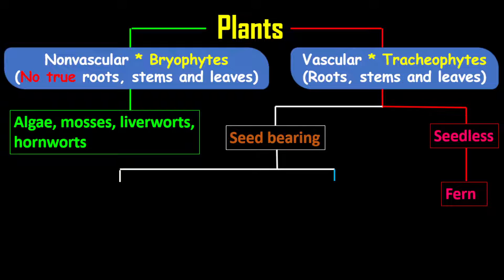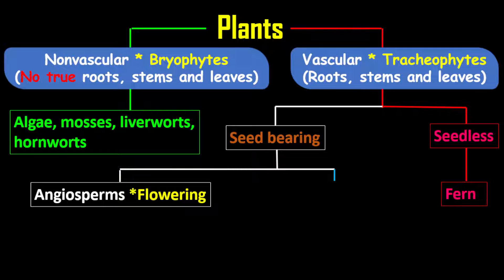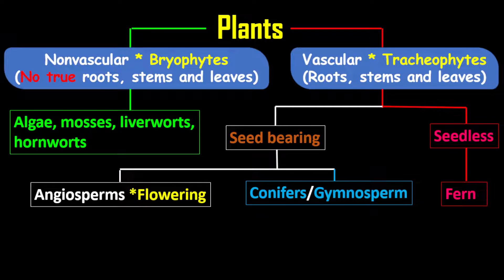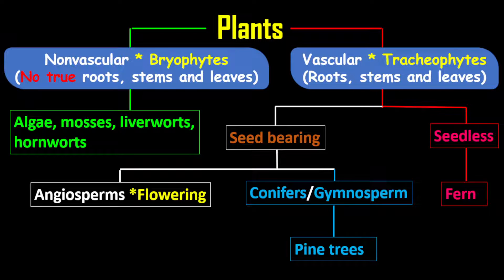The seed-bearing plants can be broken down into angiosperms, which are plants that produce flowers — we call those flowering plants. And we have the category of plants called gymnosperms, which are the same thing as conifers. Gymnosperms bear cones with seeds. A typical example of a gymnosperm is pine trees.